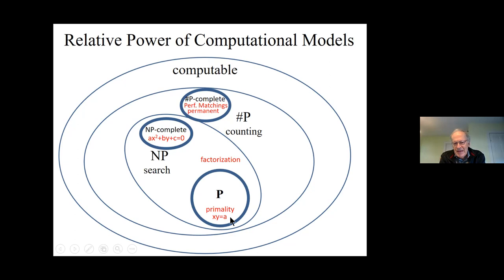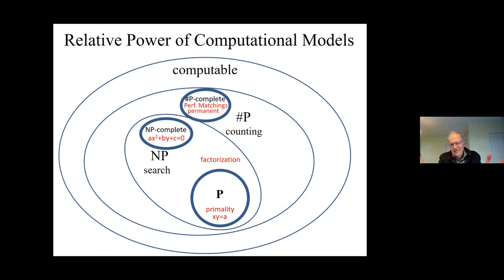You can find these easy or hard problems in almost every branch of mathematics. For example, primality and factoring relate to whether there's a solution to a certain equation. Even slightly more complicated equations requiring integer solutions are already NP-complete. Natural examples of Sharp-P problems include counting matchings in graphs and the permanent.